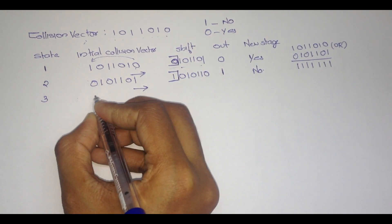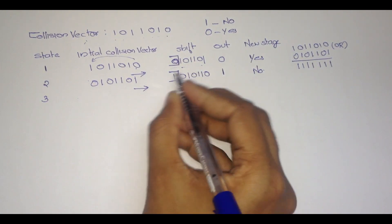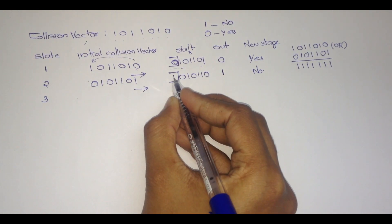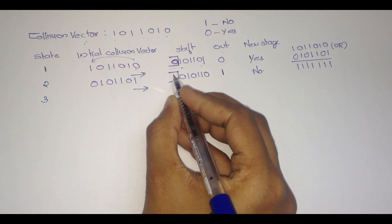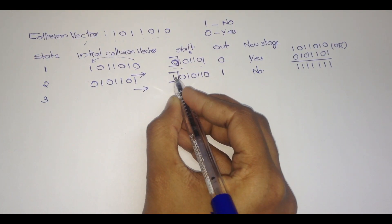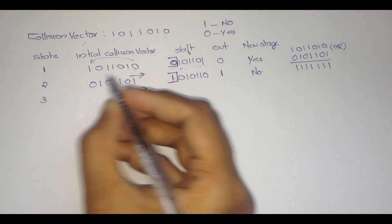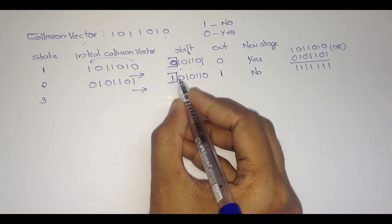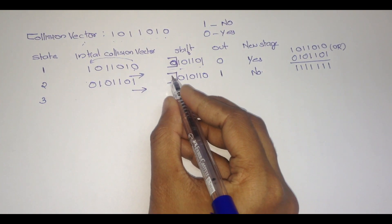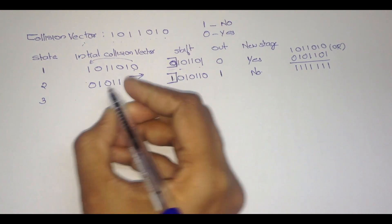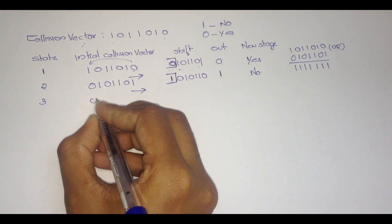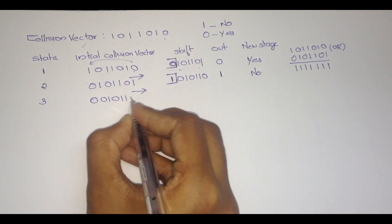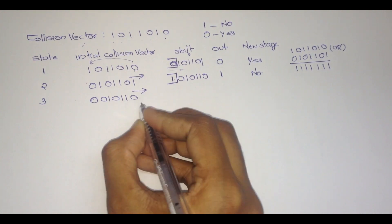At the third state, we again write this value. But if it is 1, we have to change it to 0; if it is 0, we don't want to change it. Here it is 0, 1, so we have to change it to 0. The result is: 0, 1, 0, 1, 1, 0.